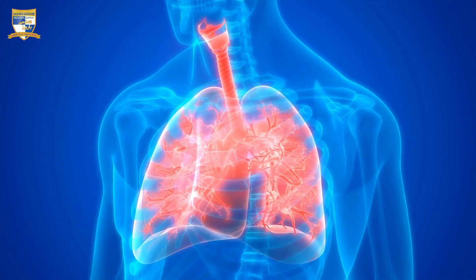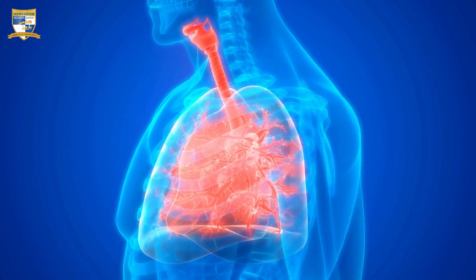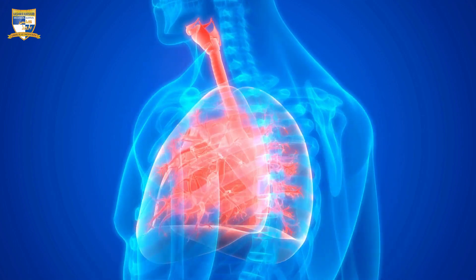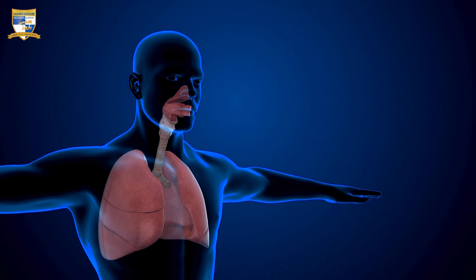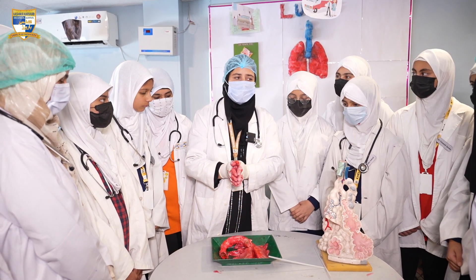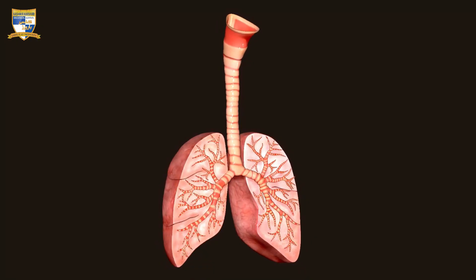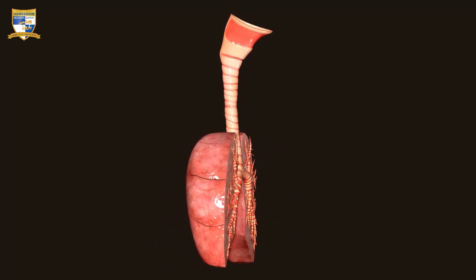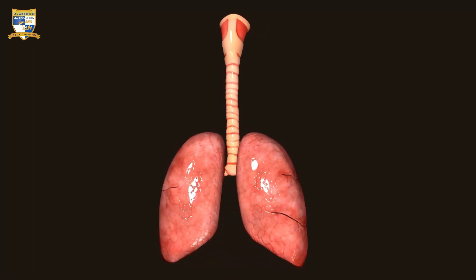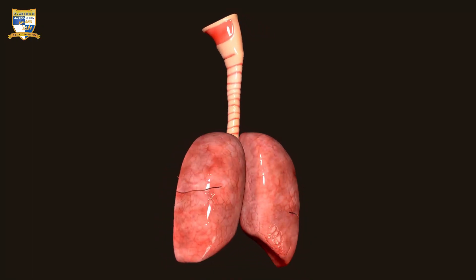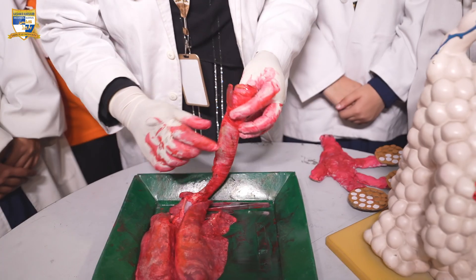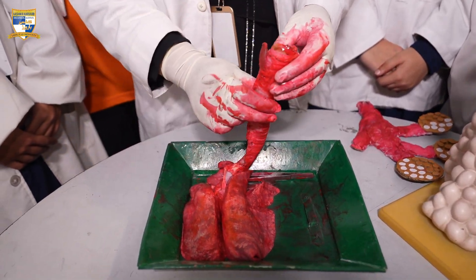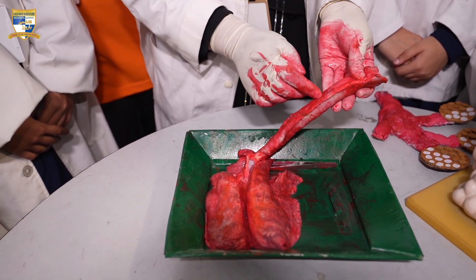The lungs are vital respiratory organs located in the thoracic cavity, responsible for gaseous exchange between the body and the environment. Each lung is divided into lobes: the right lung has three lobes — upper, middle, and lower — while the left lung has two lobes, upper and lower, to accommodate the heart.